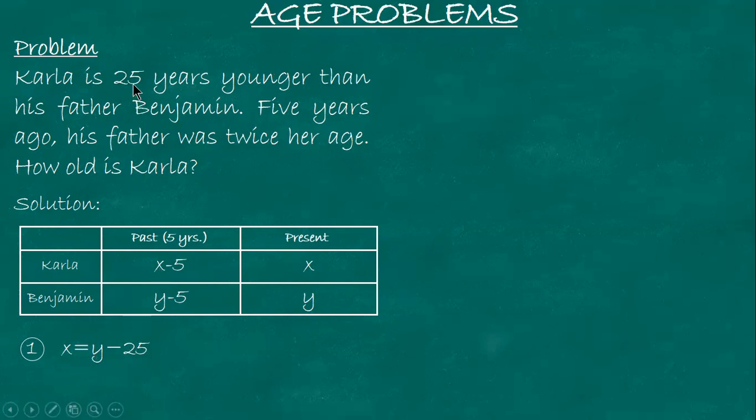So where do you put the 25? You add it to x because x is smaller. Carla is 25 years younger than Benjamin. So if Benjamin's age minus 25 equals Carla's age. Like if Benjamin is 50, Carla is 25. So if it's 50, minus 25 equals 25.